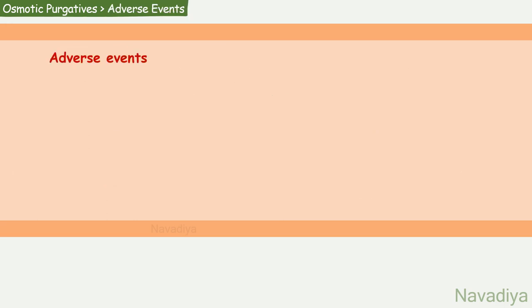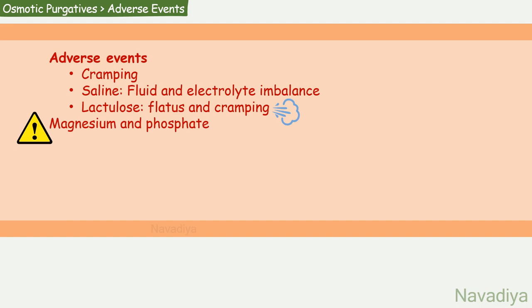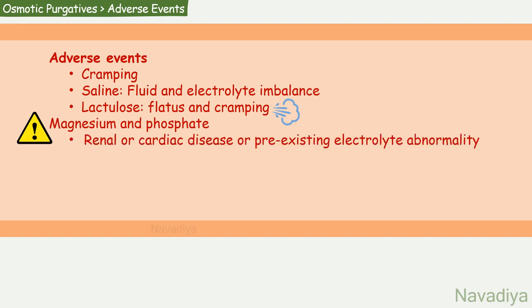Now let's move to adverse events. Cramping is a common side effect with osmotic purgatives. Repeated use of saline purgatives can cause fluid and electrolyte imbalance. Lactulose causes flatulence and cramping due to bacterial digestion. Magnesium and phosphate-containing preparations should be used cautiously in patients with renal or cardiac disease or pre-existing electrolyte abnormality. Sodium preparations should be avoided in patients with congestive heart failure.